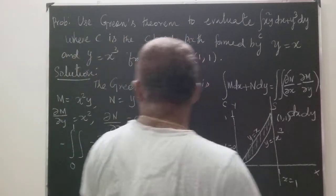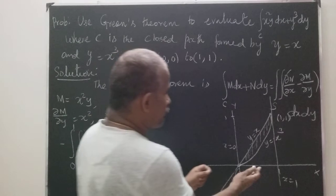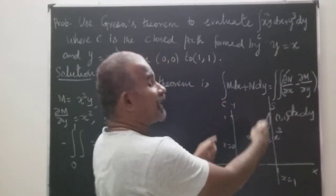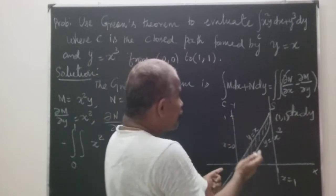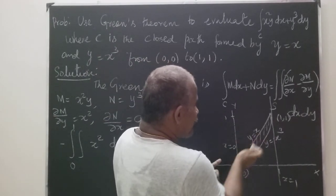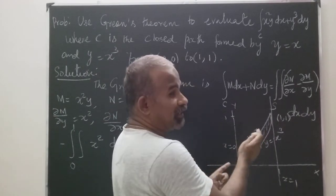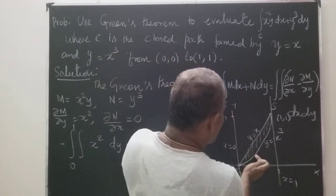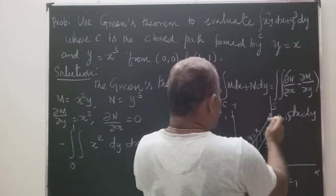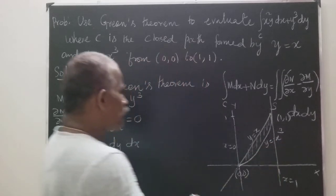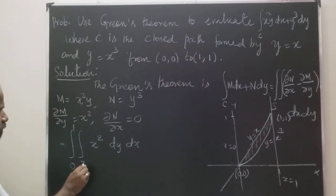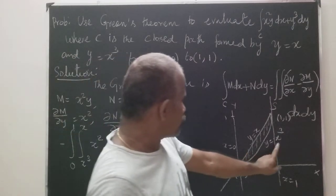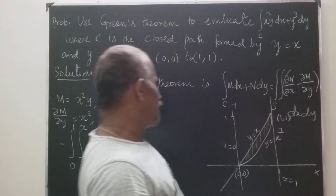X varies from 0 to 1. Y varies from x cubed to x — that is, from the cubic curve to the line — giving us the shaded bounded region. If we change the order of integration to dx dy, then y goes from 0 to 1 and x varies from y to y to the power 1/3.